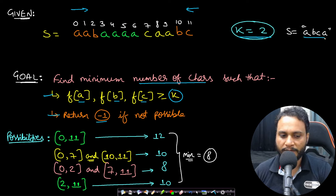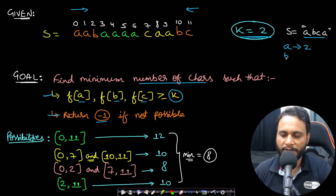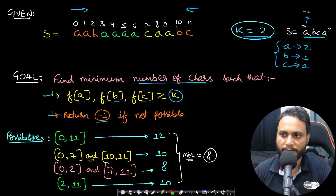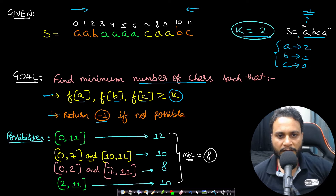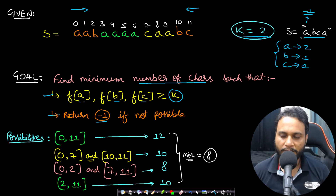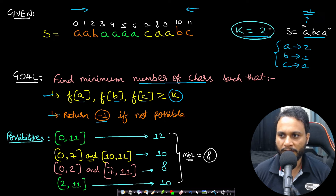For instance, if the string is 'abca' and k equals 2, even if we take the entire string the frequency of a is 2 but b is only 1 and c is only 1. Since not all frequencies are greater than or equal to 2, we return -1. The best you can do is include the entire string, but that still doesn't satisfy the constraint.